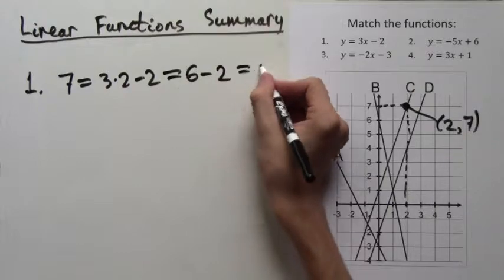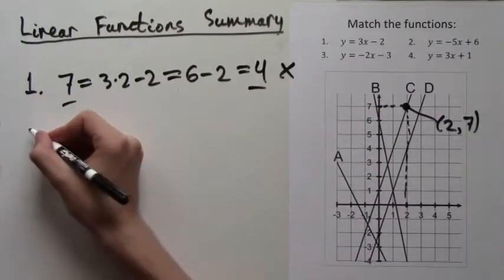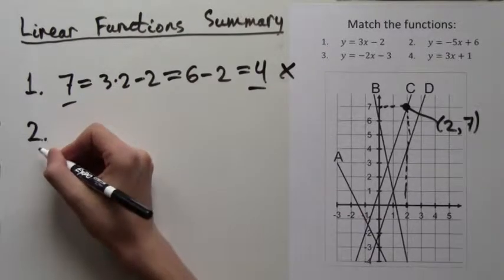The formula where we end up with a truthful equality should be the formula of line C. So here, in formula number 1, plugging in x equals 2 and y equals 7 gives us 7 equals 4, which is obviously false.